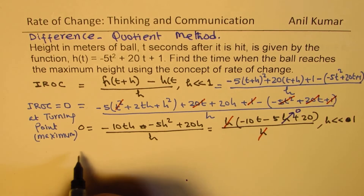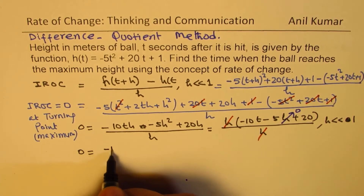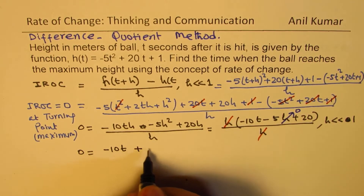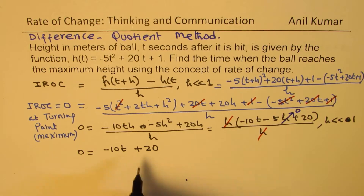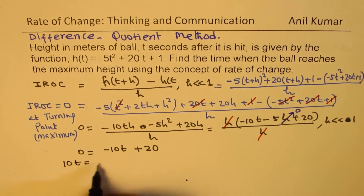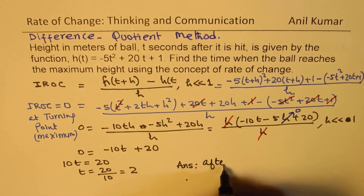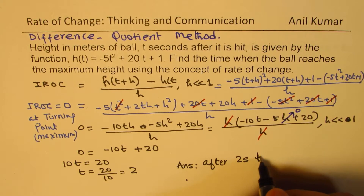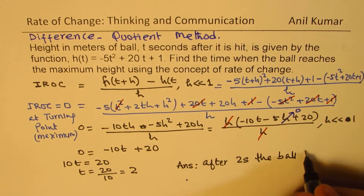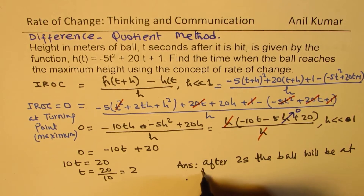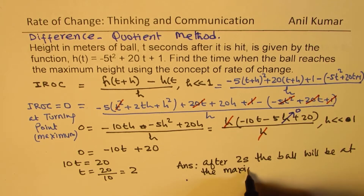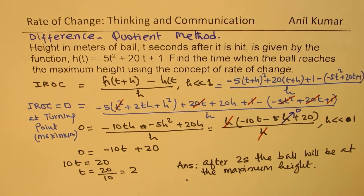Solving: 0 equals minus 10t plus 20, so 10t equals 20, giving t equals 2. After 2 seconds, the ball will be at the maximum height. If required, you can also find the maximum height by substituting t equals 2 into h of t.